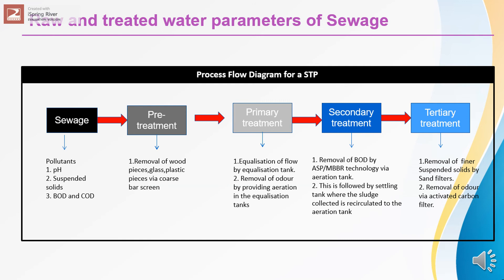Let me throw more light on this sewage treatment plant with the help of this process flow diagram. As you can see here, sewage has a slightly acidic pH, and it constitutes suspended solids and BOD and COD. In the pre-treatment stage, the wood particles, glass particles, and plastic particles are screened off via a bar screen.